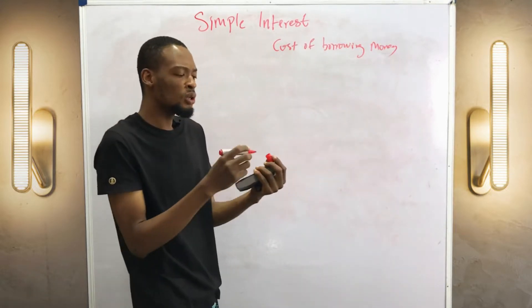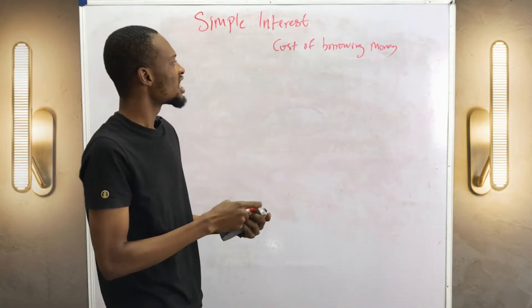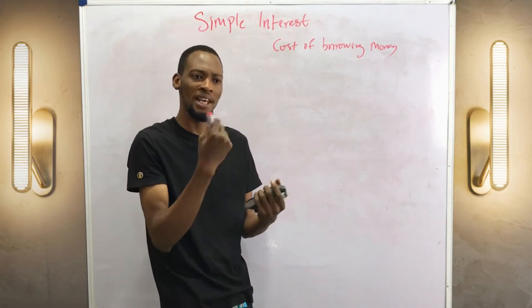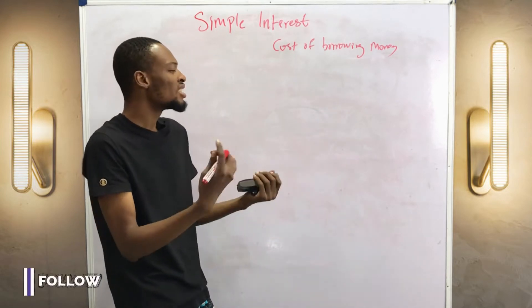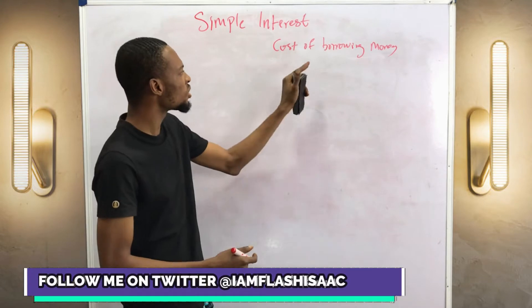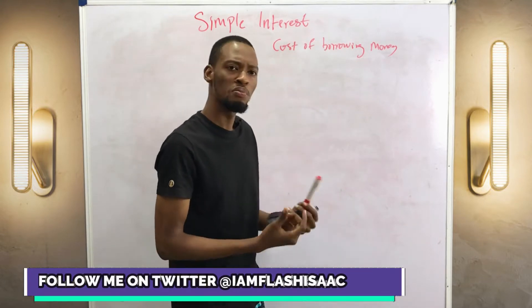If you take a loan at the bank, there's a particular amount you pay either yearly, in six months, or two years, depending on the agreed time based on the money you borrow.